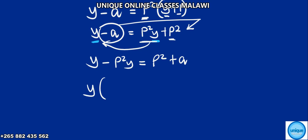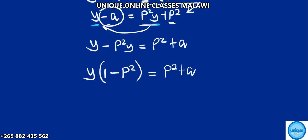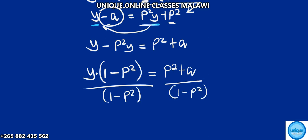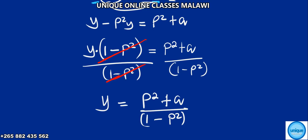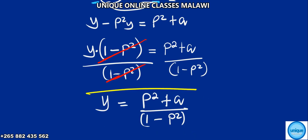We need to factor out y. So we're going to have y times open bracket: y into 1 meaning one, and minus y into P squared — we're going to eliminate P squared — so the bracket is equal to P squared plus a. Then we divide both sides by one minus P squared. Remaining with y is equal to P squared plus a over one minus P squared.